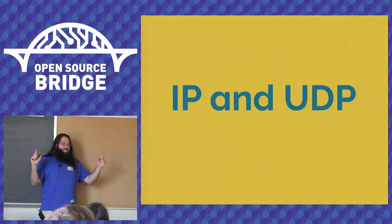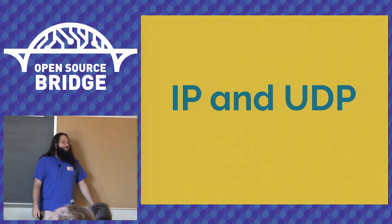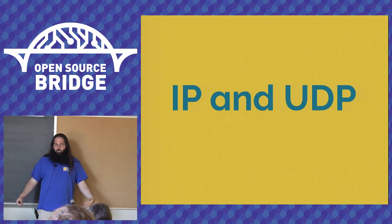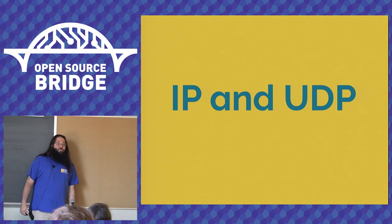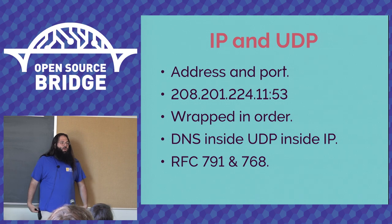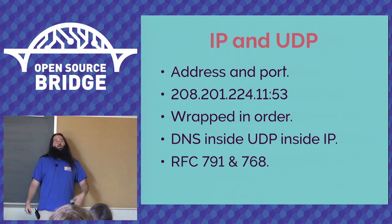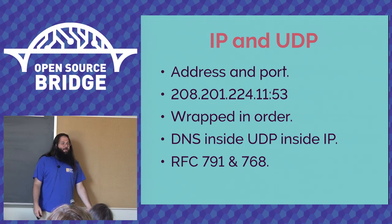We know where we're going to send this query. We need to encode that data in a way that everything on the internet can get that query to the DNS server — and those formats are IP and UDP. As the name suggests, IP is the core protocol of the internet; it is the thing that basically everything on the internet speaks. Back in the really old days, network protocols were specific to every manufacturer — Honeywell had their own, DEC had their own — so you couldn't really connect networks together if they were made by different manufacturers.